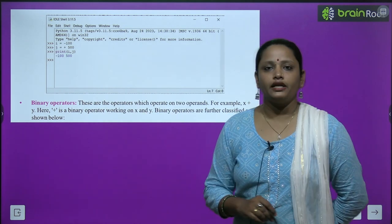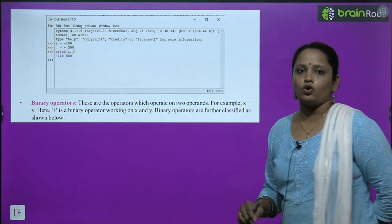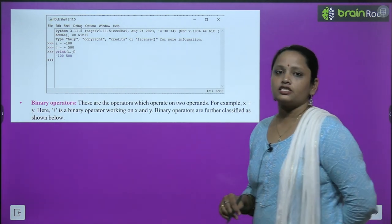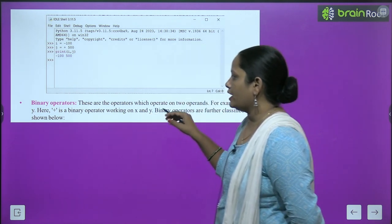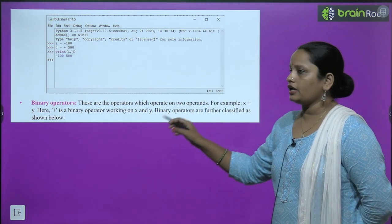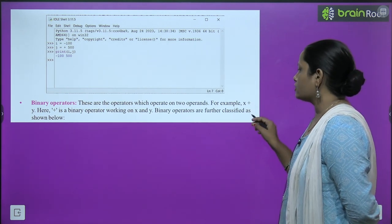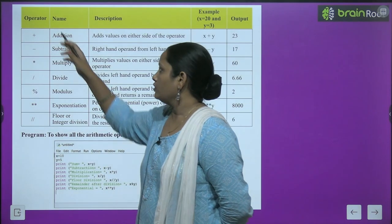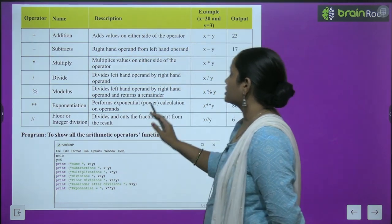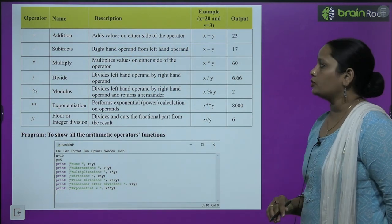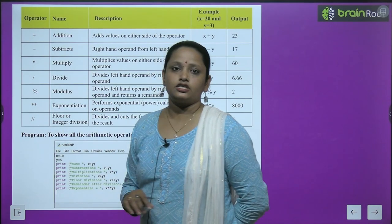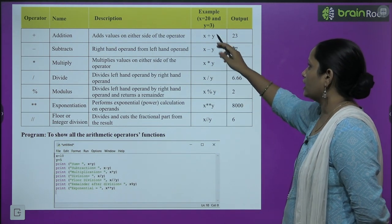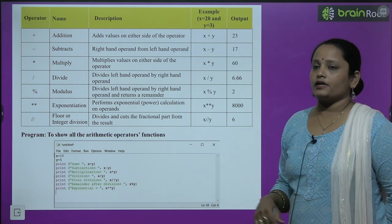Next aata hai binary operators. These are operators which operate on two operands. For example, x plus y — here plus is the binary operator working on both x and y. Binary operators are further classified. The addition operator adds values on both sides. Yahan x hai 20 aur y hai 3, toh dono ko plus karke ban gaya 23. Similarly, minus sign subtracts the right operand from the left — x minus y gives 17. Multiply karne pe answer will be 60.